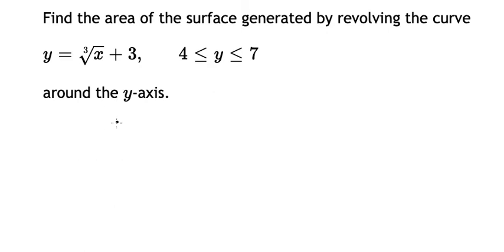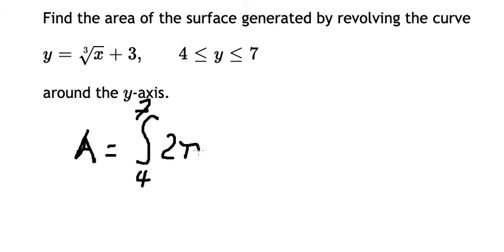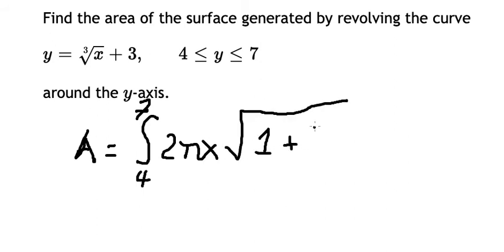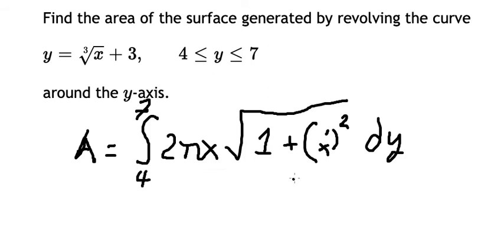We can apply the formula here. The surface area A equals the integral from 4 to 7 of s times the square root of one plus the first derivative of s squared, dy. Now we need to find s and the first derivative of s.